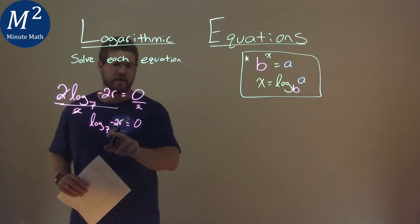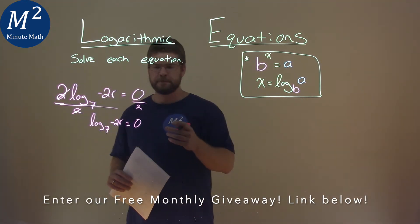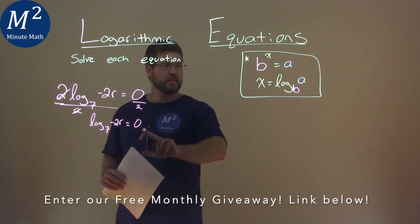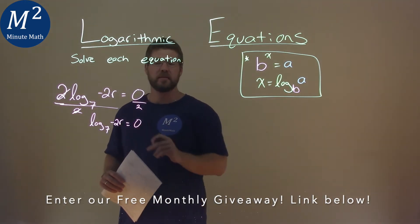Then when we get here, we have to use our little formula here. Our x value is the 0, our base is 7, and a is negative 2r.